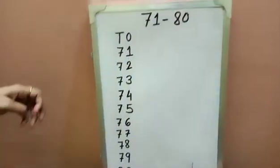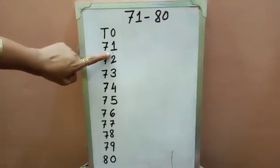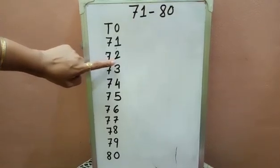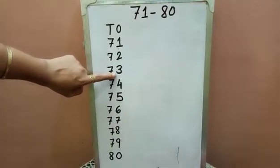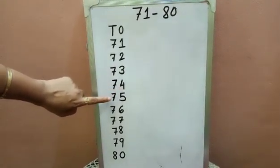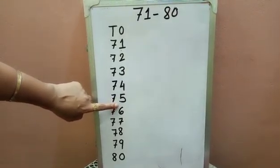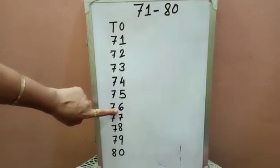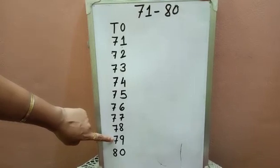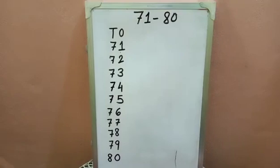Let's learn the numbers once again. 71, 71. 72, 72. 73, 73, 73. 74, 74. 75, 75. 76, 76, 76. 77, 77, 77. 78, 78. 79, 79. 80, 80, 80. Okay children.